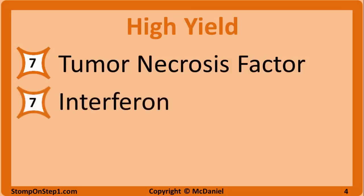Also with a high yield rating of 7 is interferon. You want to know how it's related to granulomas as well as intracellular infections like TB. Chronic granulomatous disease — you need to know it is X-linked recessive, that it's a defect in NADPH oxidase which leads to low free radicals that inhibit the action of the phagosomes, and its relationship with granulomas and susceptibility to catalase-positive organisms.